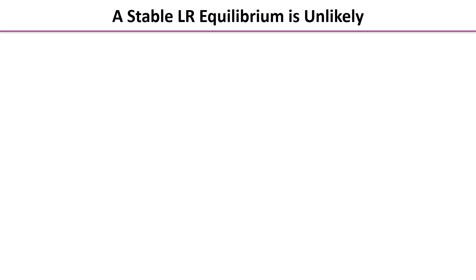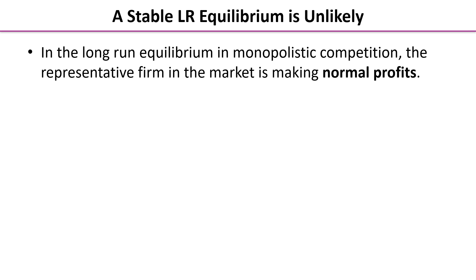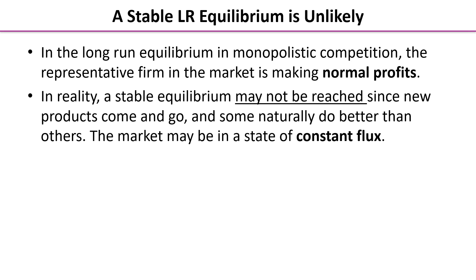We can now evaluate this theory by noting that the stable long-run equilibrium we've been drawing is unlikely to happen in practice. In theory, the representative firm makes only normal profits in the long run. In reality, firms are constantly looking for ways to keep their average revenue greater than average cost to maintain some supernormal profits. So the market is constantly changing — new products come and go, some succeed and some disappear quickly, and businesses are constantly trying to maintain slightly more price-inelastic demand.